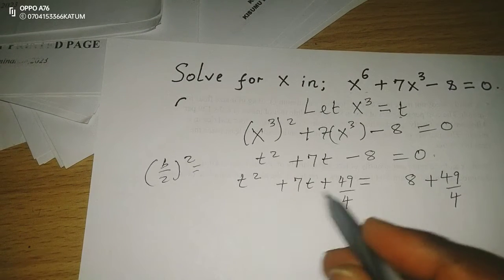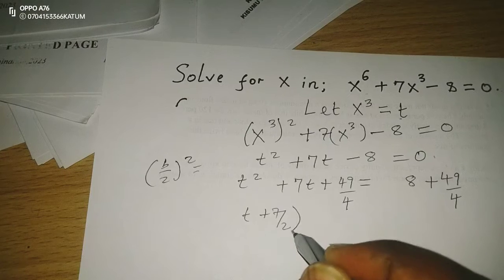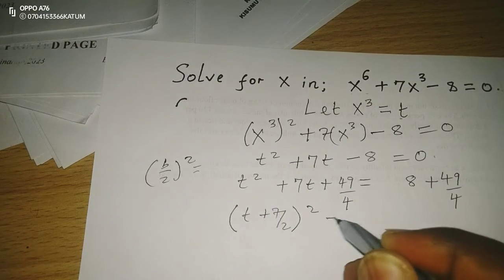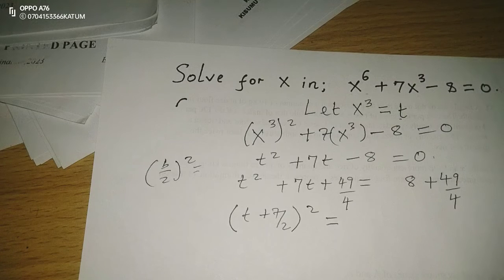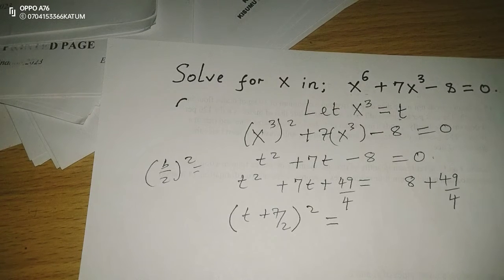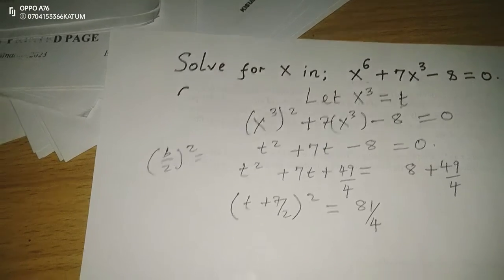Therefore, we can factorize this side to have (t + 7/2)^2 equals to, when we take 8 and we add 49/4, we're going to have 81/4.